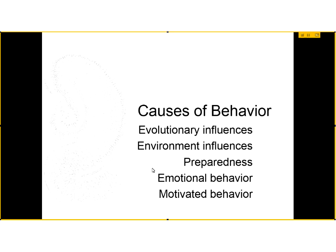Then we'll talk about some evidence of how emotion — which is present in some of these situations where we're learning from our environment — is regulated or influenced by the central nervous system, and how the central nervous system contributes to emotion in certain structures. Then we'll finish talking about motivated behavior — this idea that we can change our behavior because we are in a certain state, motivated to eat or to explore.